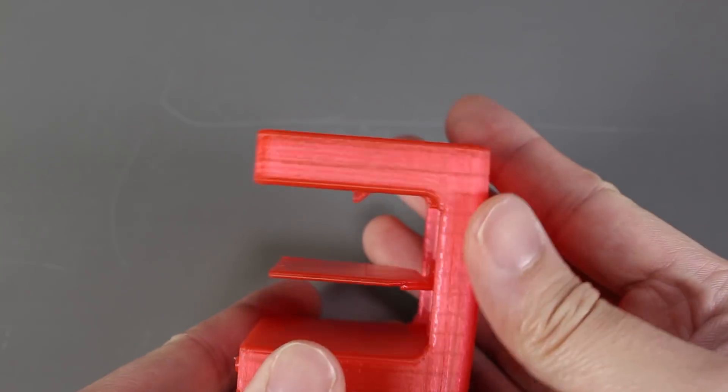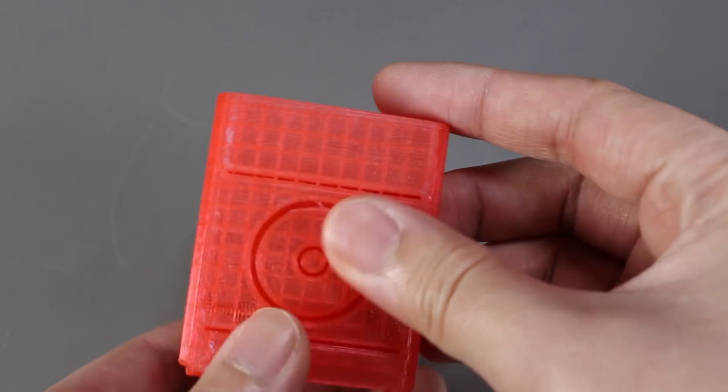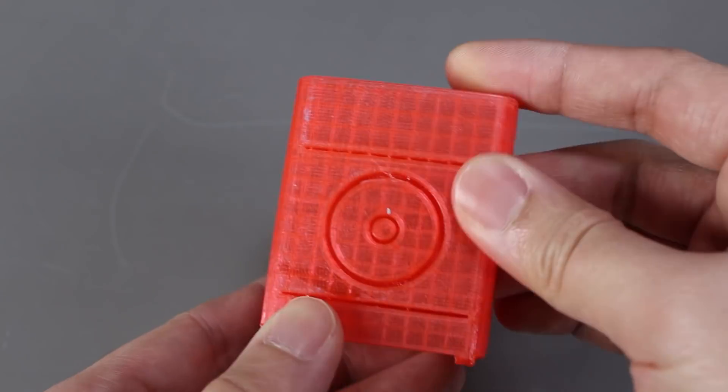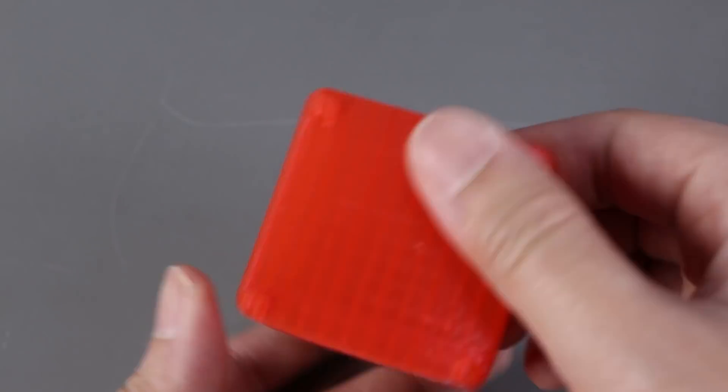Before we start, let's take a look at the print we have. It is printed with Tinkerine 1.75mm PLA filament. We can still see and feel the lines of each layer.